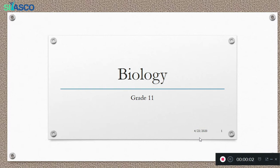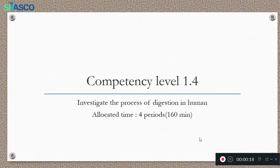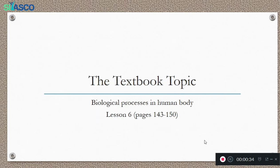Dear children, now I would like to teach the second term lessons. This is the first lesson for the second term. It is a biology lesson that comes under competency level 1.4: investigate the process of digestion in humans. To complete this lesson at the competency level, it is allocated four periods. The textbook topic for this same lesson is given as biological processes in the human body.